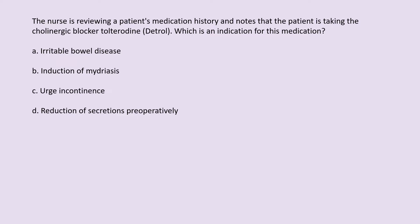The nurse is reviewing a patient's medication history and notes that the patient is taking the cholinergic blocker tolterodine (Detrol). Which is an indication for this medication? A. Irritable bowel disease. B. Induction of mydriasis. C. Urge incontinence. D. Reduction of secretions preoperatively.